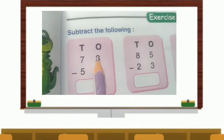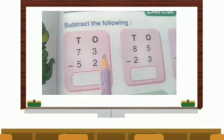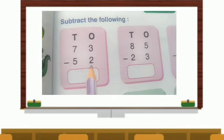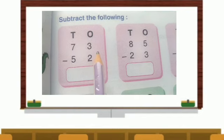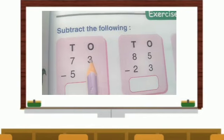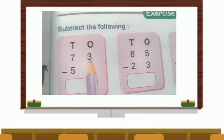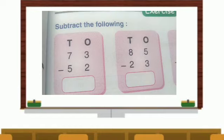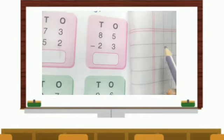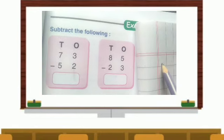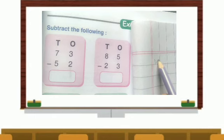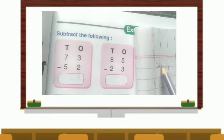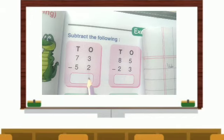So you see here tens and ones. 73 minus 52. We will take first the ones house. 3 minus 2. You can use your rough copy. Draw three lines: 1, 2, 3. Minus, that is take away 2. One left. So you write here 1.